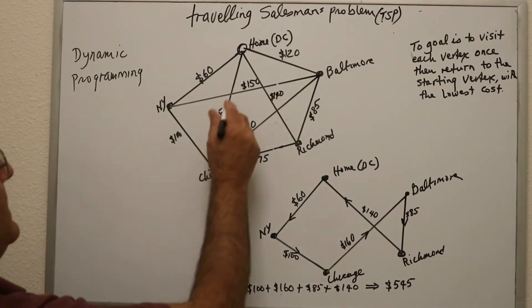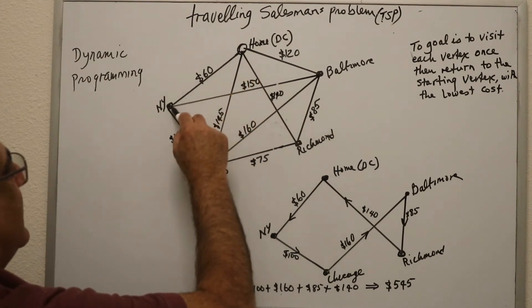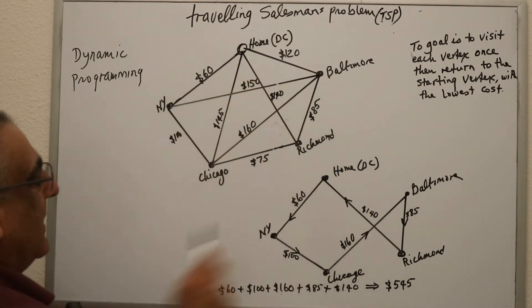Now if you look back here, I can go from DC to New York. The cost is $60, so I'm gonna highlight that. I included that in my draft.